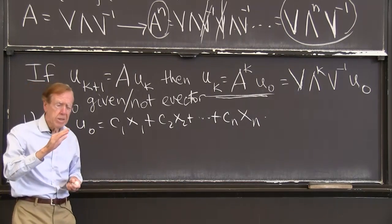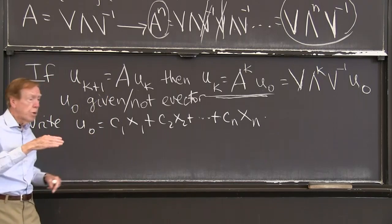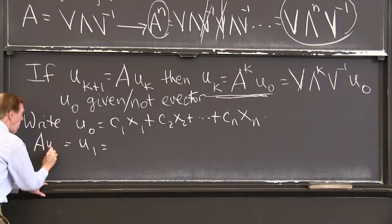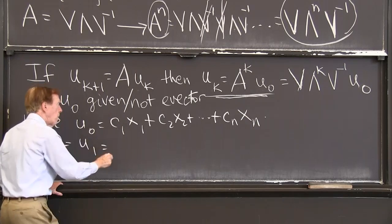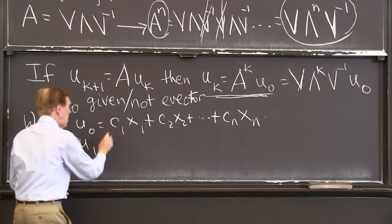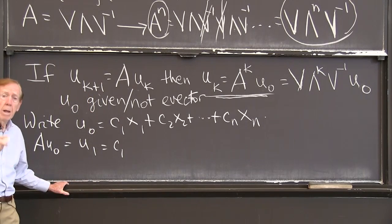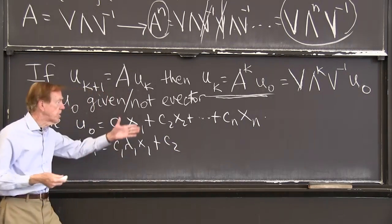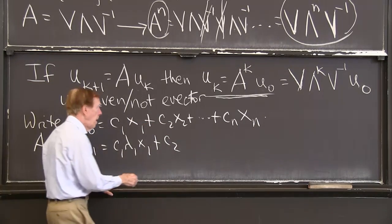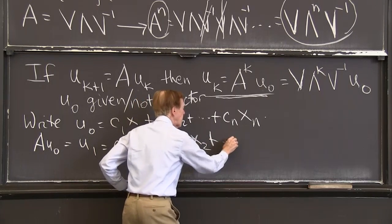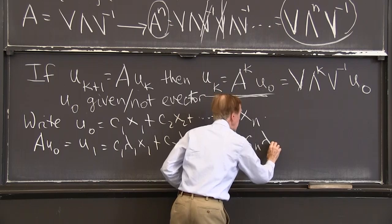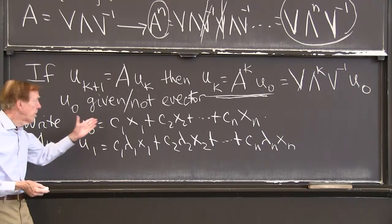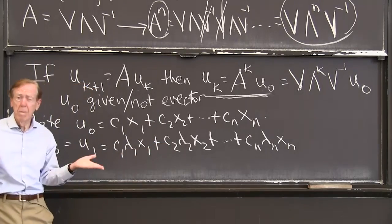Now the point is that as I take these steps to u_1, u_1 will be A·u_0. So when I multiply by A, c_1 times A·x_1 is lambda_1 times x_1 — it's an eigenvector. C_2 tells me how much of the second eigenvector I have; when I multiply by A, that multiplies by lambda_2. And so on: c_n·lambda_n·x_n. Each eigenvector goes its own way, and I just add them together.